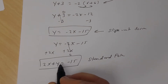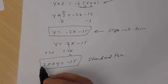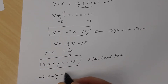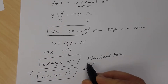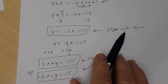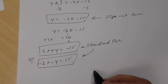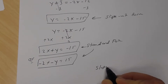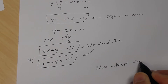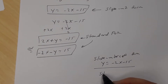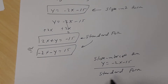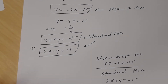The other possible standard form answer — multiplying both sides by negative 1 — is negative 2x minus y equals positive 15. Either answer is correct. Your slope-intercept form is y equals negative 2x minus 15, and your standard form is 2x plus y equals negative 15.